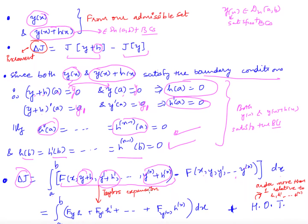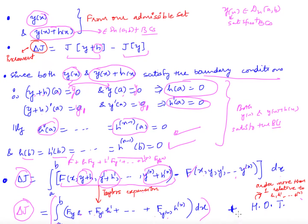Applying Taylor's expansion to the first term, we get f plus h·f_y plus h'·f_{y'} plus ... plus h^(n)·f_{y^(n)}, plus higher order terms (containing products of h, h', ..., h^(n)). The f terms cancel, leaving the integral of [h·f_y + h'·f_{y'} + ... + h^(n)·f_{y^(n)}] dx. This is our δJ — the required variation, by definition.